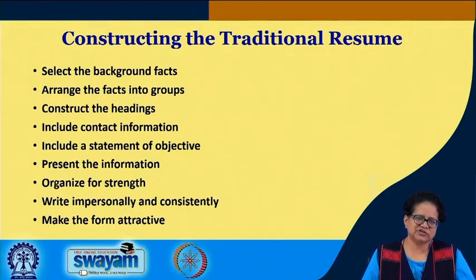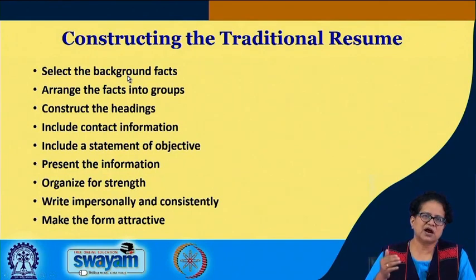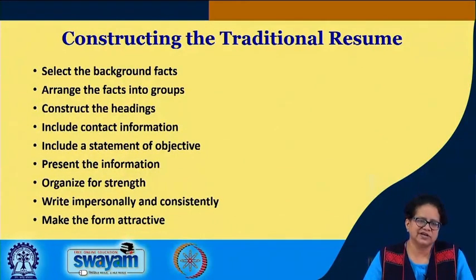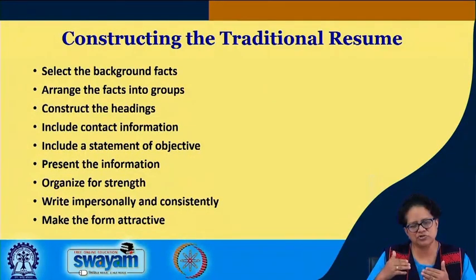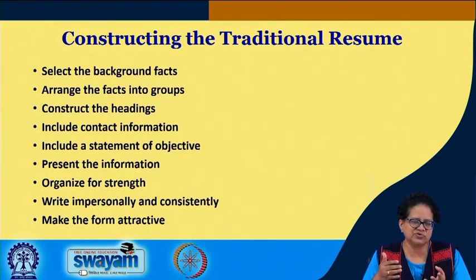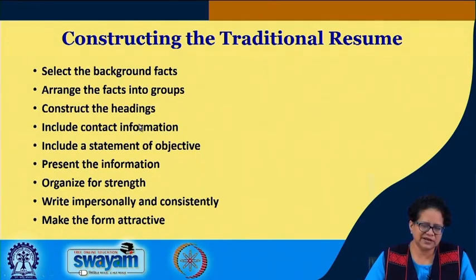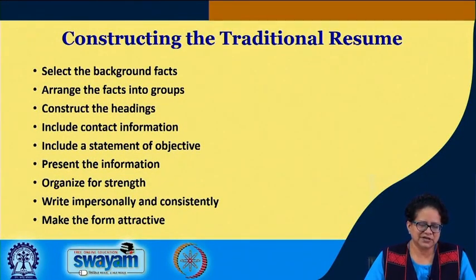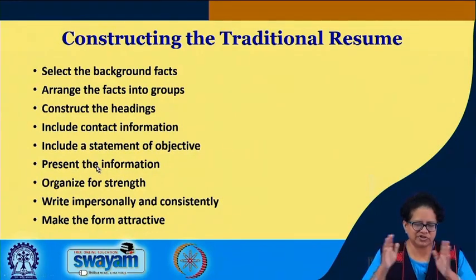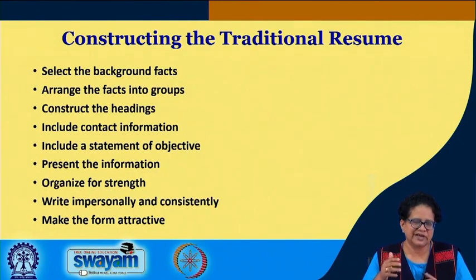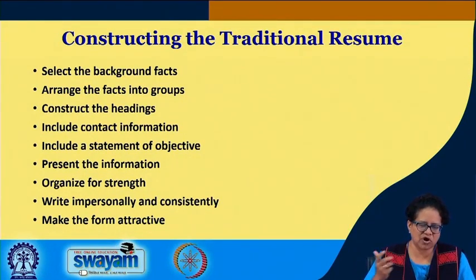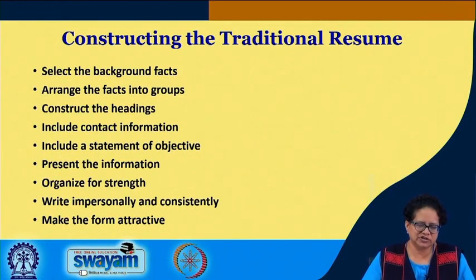How do you construct the traditional resume? First, look at the background facts: what are your strengths and weaknesses, what do you know about yourself? Arrange these facts into groups — those dealing with academics, internship, extracurricular interests, references, and any other aspect you can include. Construct the headings accordingly. Include contact information right at the top where it is most visible. After contact information, have a statement of objective or career goals. Then present the information organized with various strategies so that your CV is strong. Write impersonally or in the third person, be consistent in your writing, and make your resume format attractive.